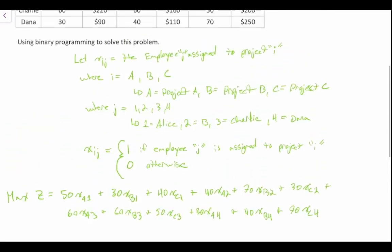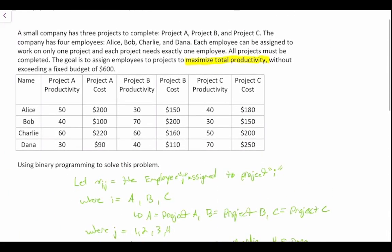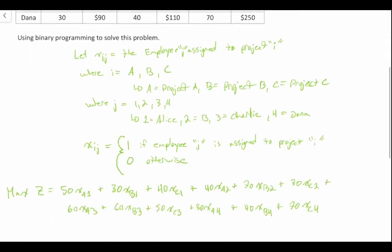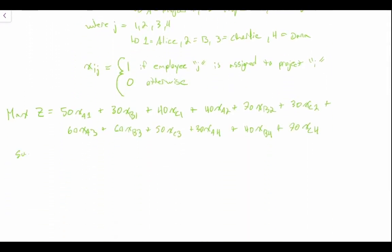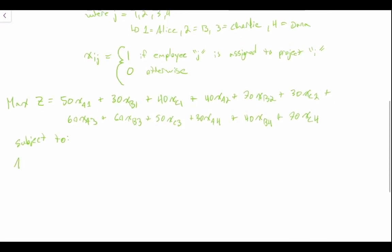Now we have to write some constraints, and we have a number of constraints here. First, we have to recognize that each employee can be assigned to work on only one project. So we're going to say subject to, and we have constraints for each of our employees. We start with Alice. XA1 plus XB1 plus XC1 must be less than or equal to one. It has to be less than or equal to one because it doesn't say that every employee must receive a project, so we have to account for Alice might not receive a project.